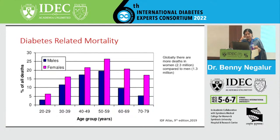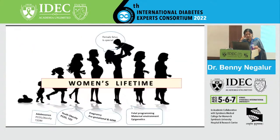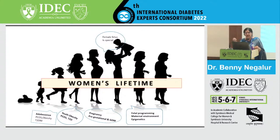Women suffer more because they have a life cycle that men do not. It starts from childhood — we are the second largest childhood obesity nation in the world. These youngsters will be increasingly obese and will suffer from metabolic problems, giving rise to obesity, PCOS, and problems with pregnancy including pre-gestational diabetes.